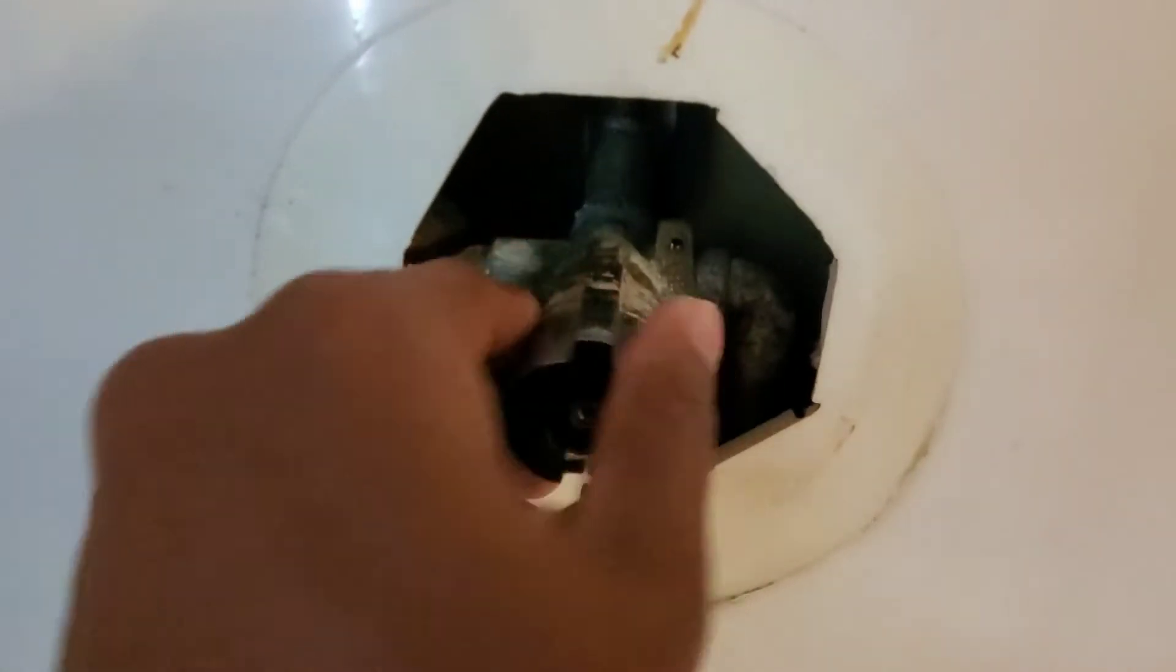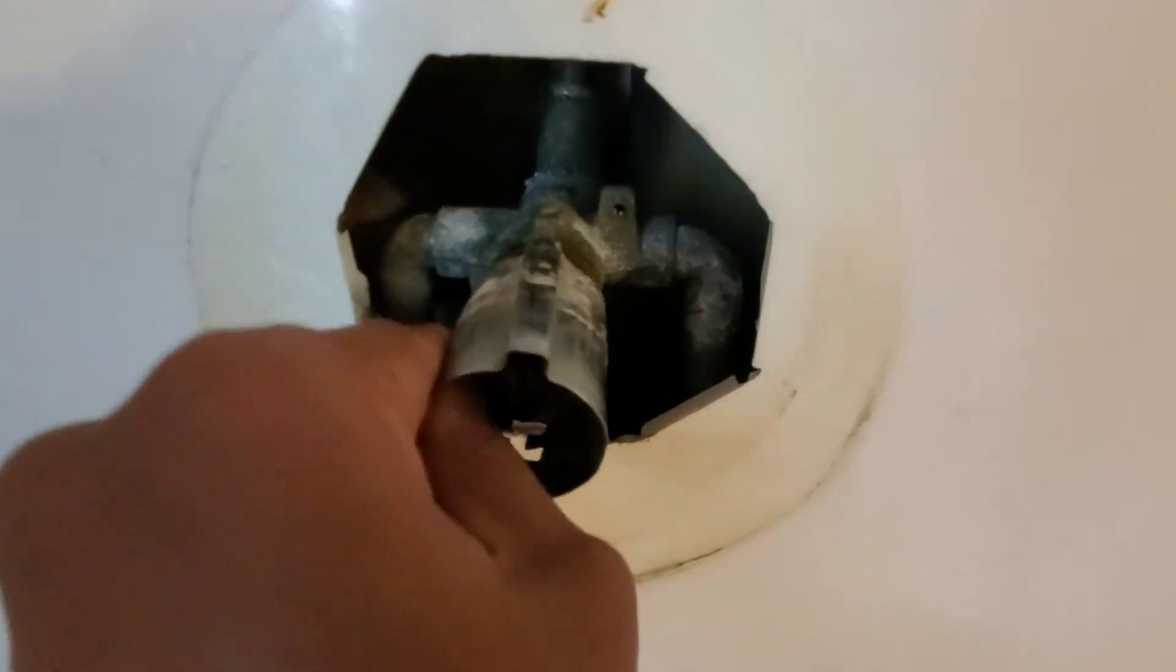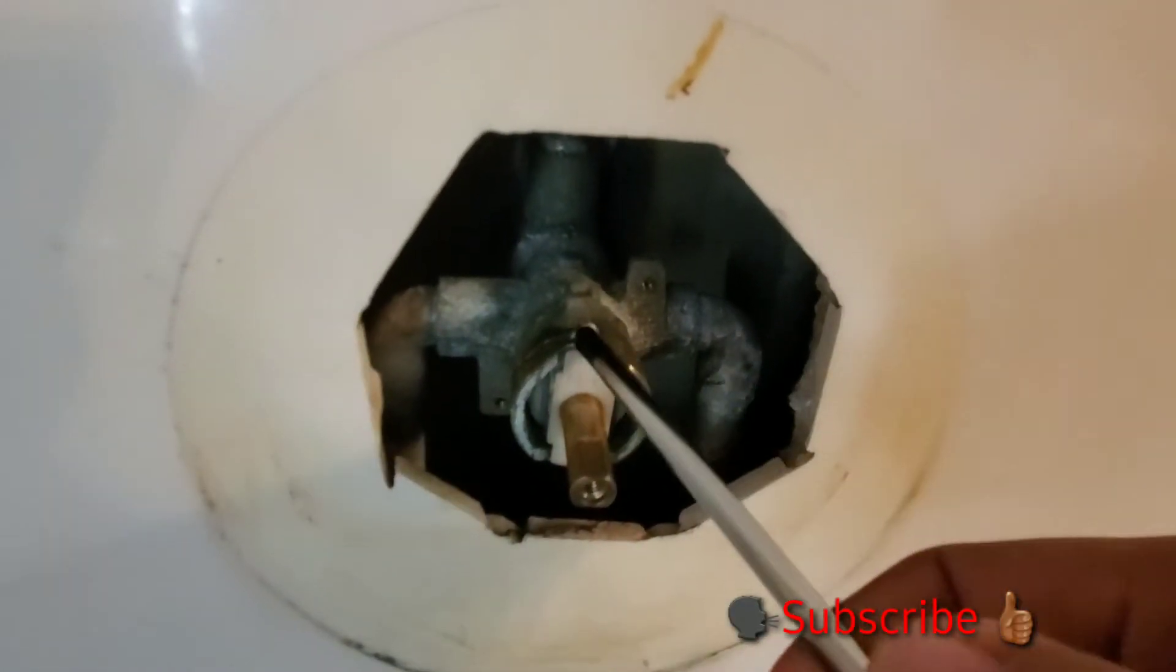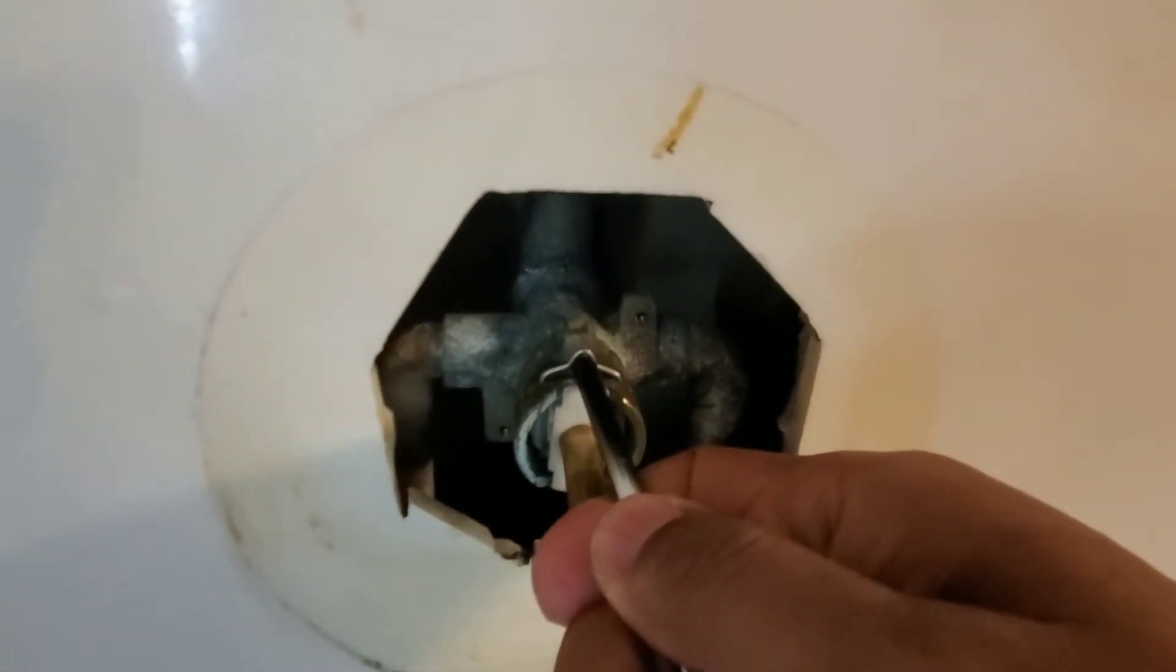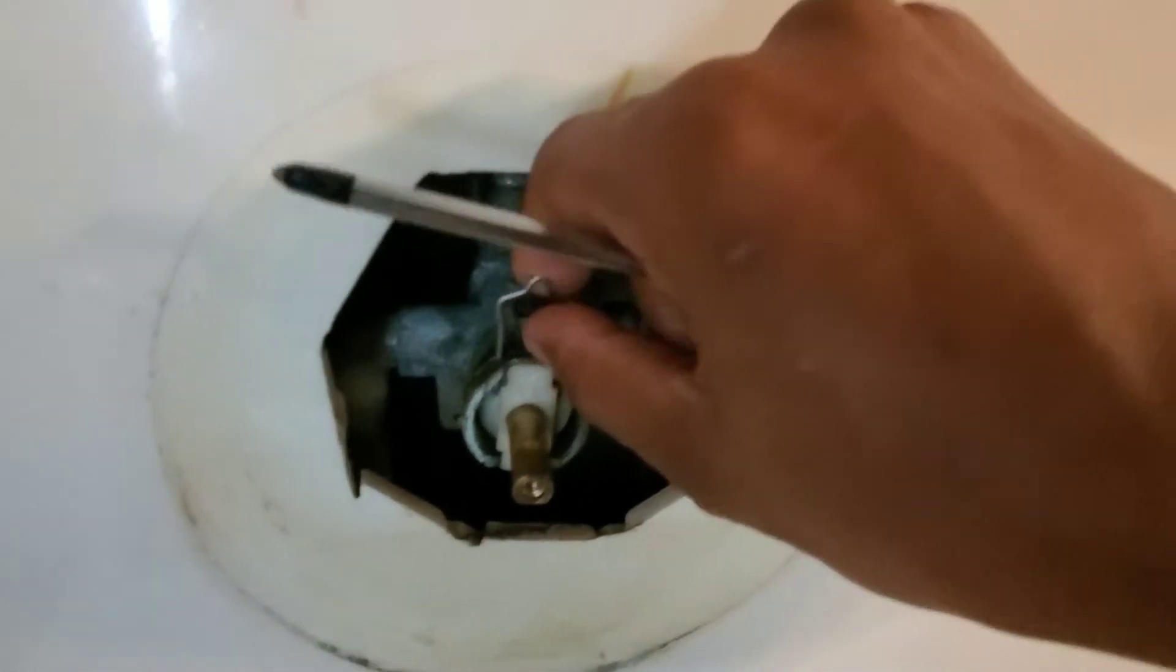Now, go ahead and remove that stop tube. Next, you want to get your Phillips screwdriver. Take your time. Kind of flick the retainer clip up and remove it. You don't have to put a whole lot of pressure on it and then just pull it out.